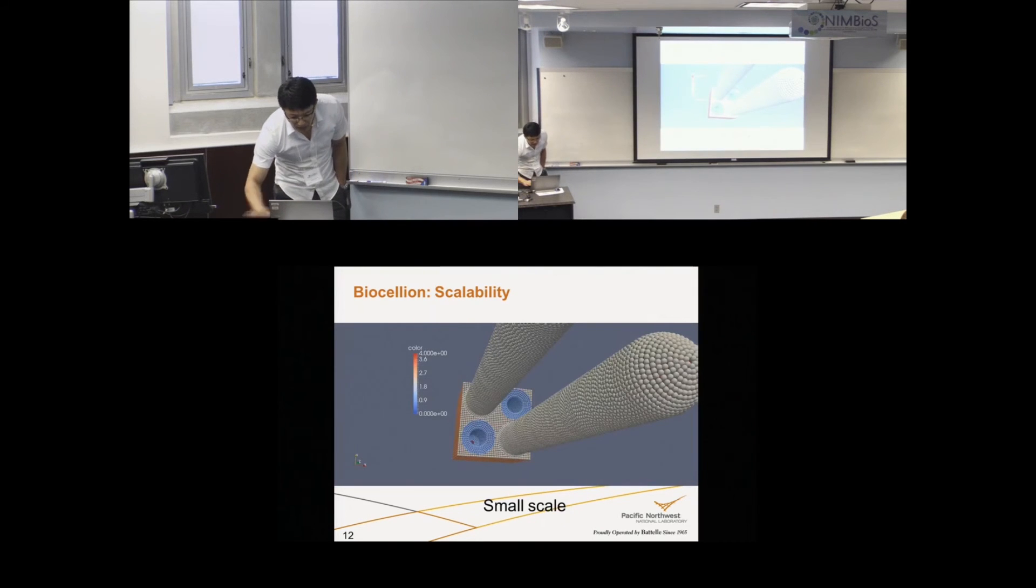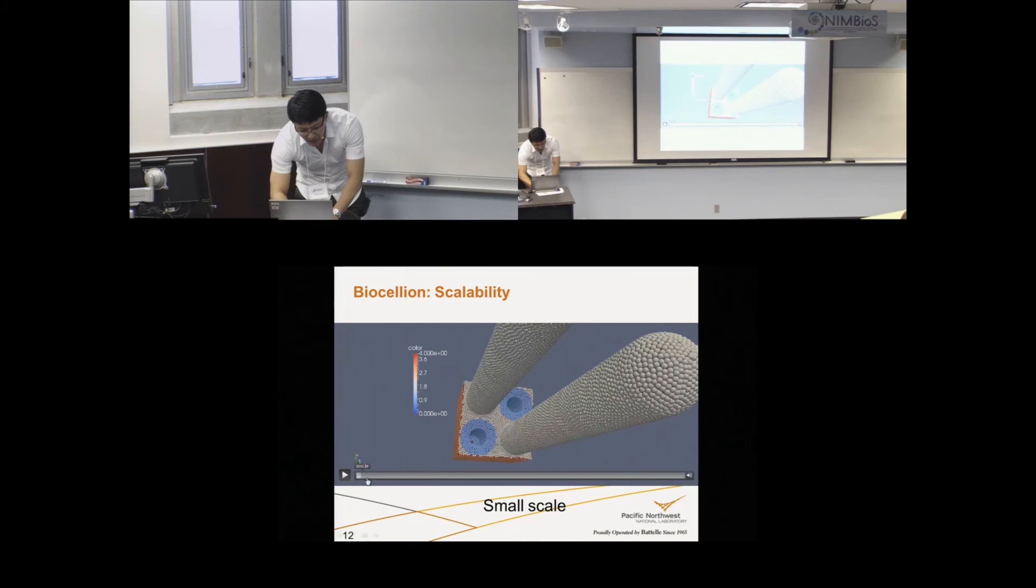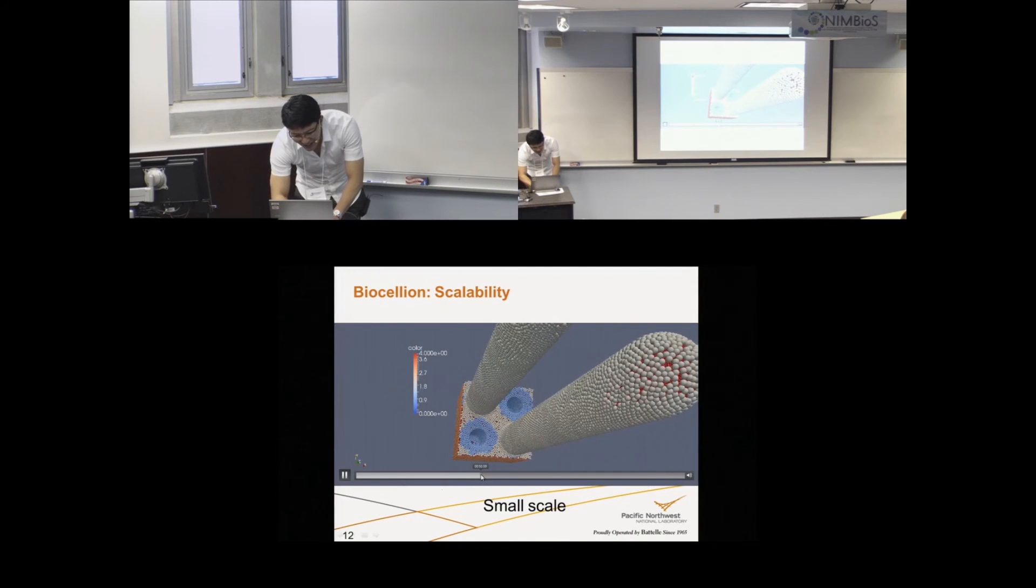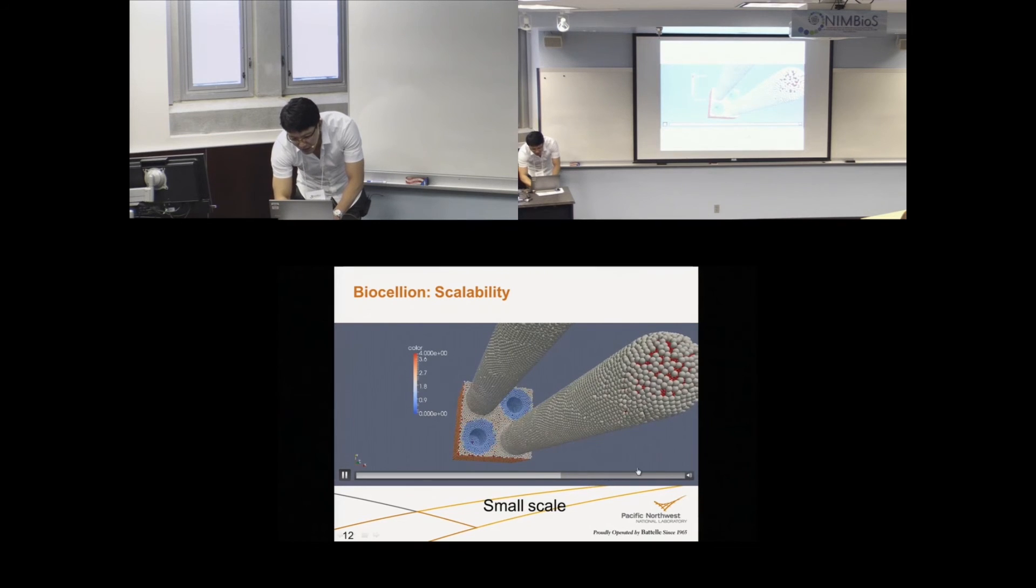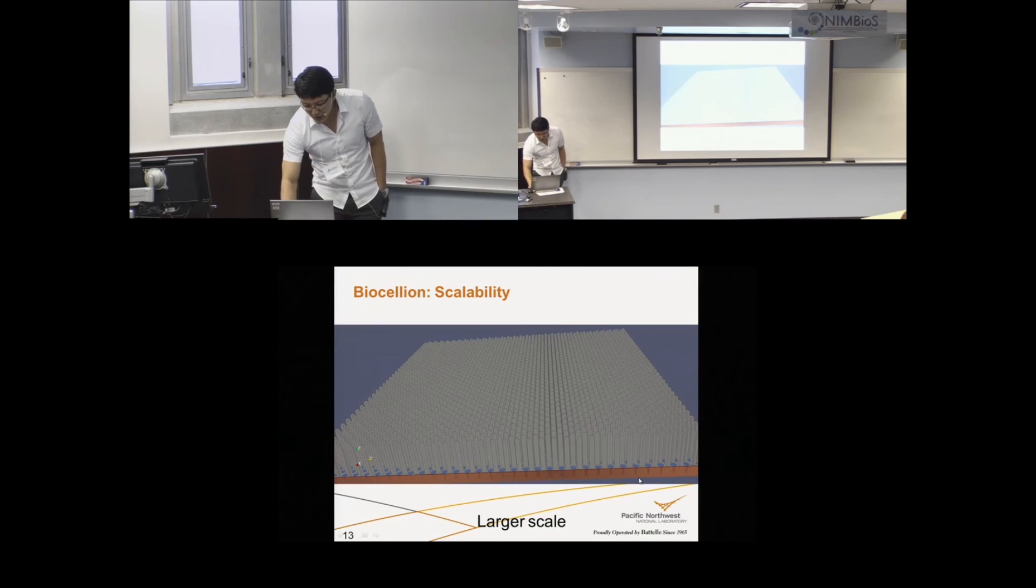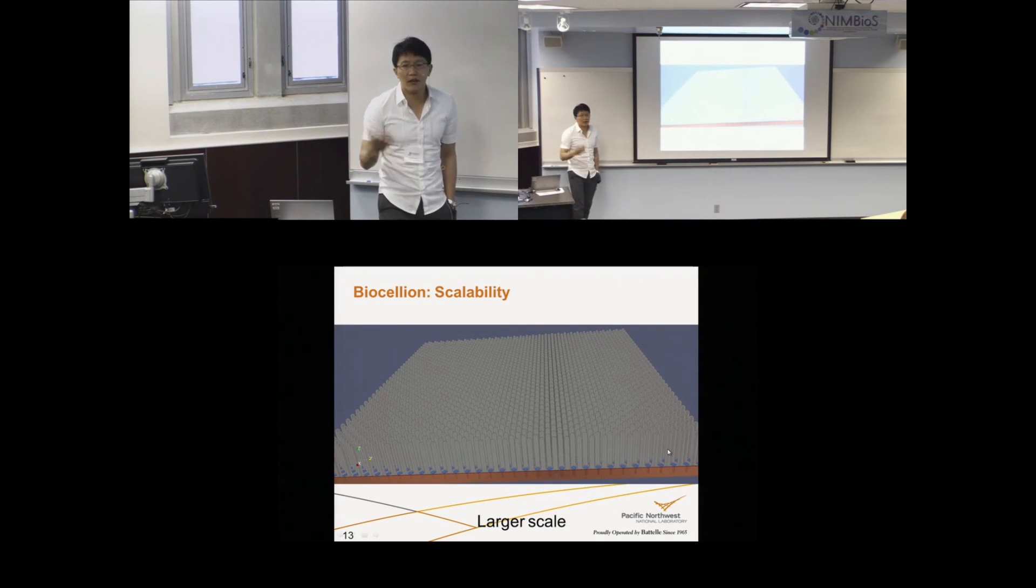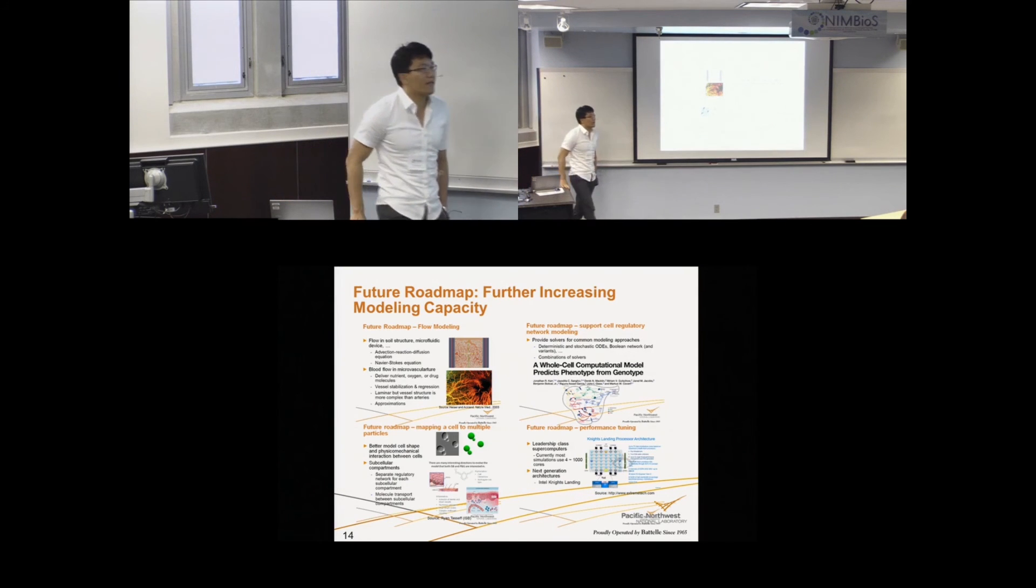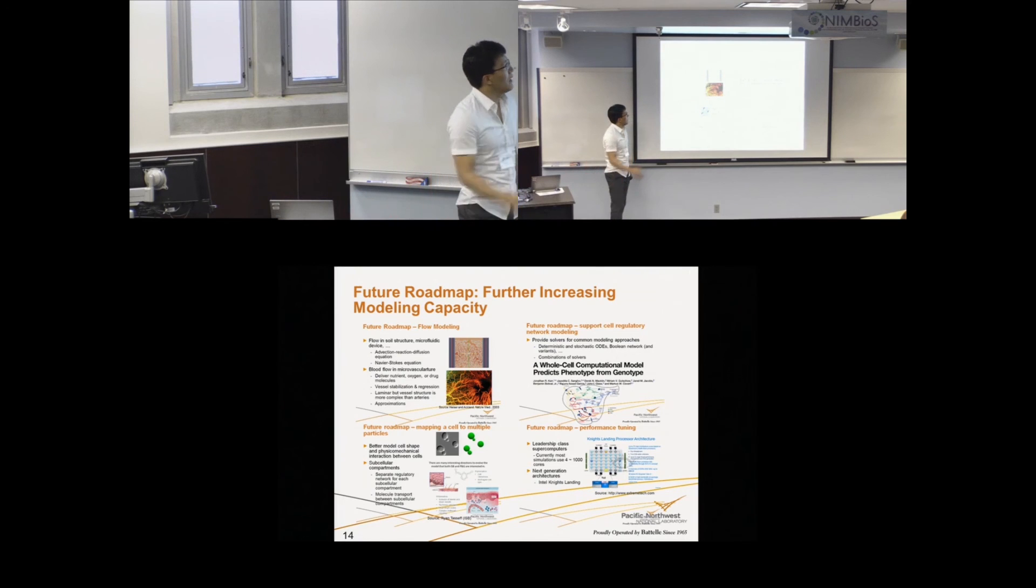And if I talk about scalability, this is small scale model video. If I speed up this a bit, this is a work with Gary On and Chase Cockrell at the University of Chicago. We can model this in small scale first, then go to a larger scale like this. This involves 138 million agents. And if I zoom in, zoom out, you can see the scale. And we are currently working on further improving this biosalien's modeling capacity in multiple aspects.